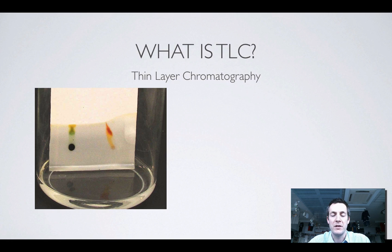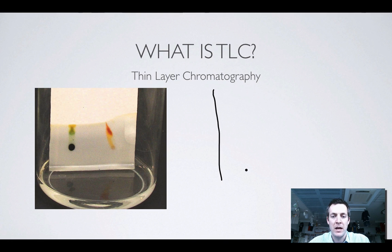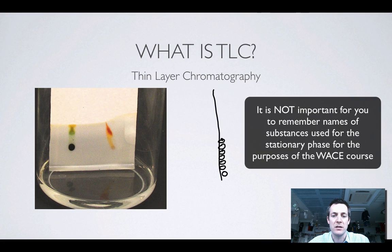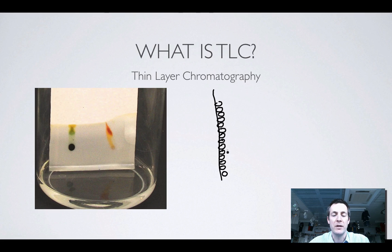In thin layer chromatography, instead of using a filter paper, what you actually do is get some kind of hard backing like a sheet of plastic, metal, or glass, and you coat that sheet in a very thin layer of silica, which is basically silicon dioxide or aluminium oxide. You attach this to the hard surface and it acts a little bit like a filter paper in that it will draw a solvent up it if you dip the thin layer into that solvent.